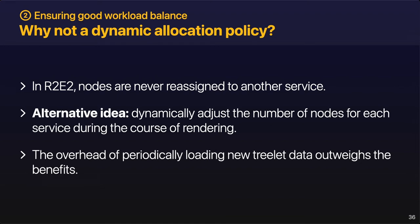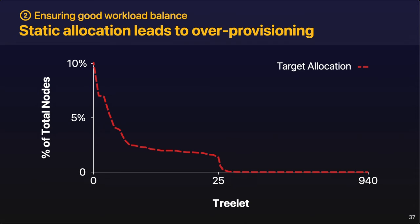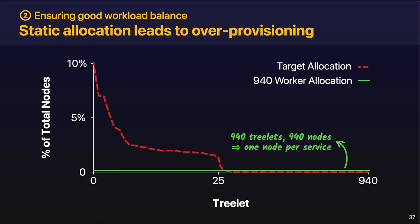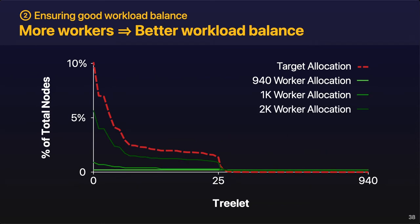One implication of this design is that the entire scene must be loaded in the aggregate memory of all workers — each service must be allocated at least one node in order for the rendering to complete. As a result, at low worker counts, lightly loaded services that require less than one node may be over-provisioned, reducing the number of workers available for the most loaded services. For example, this graph is for a scene with 940 treelets. The red line is our ideal allocation, but with only 940 workers, each service gets exactly one node, resulting in the suboptimal allocation depicted by the green line. R2E2's ability to more closely match the target allocation improves as we increase the number of worker nodes.